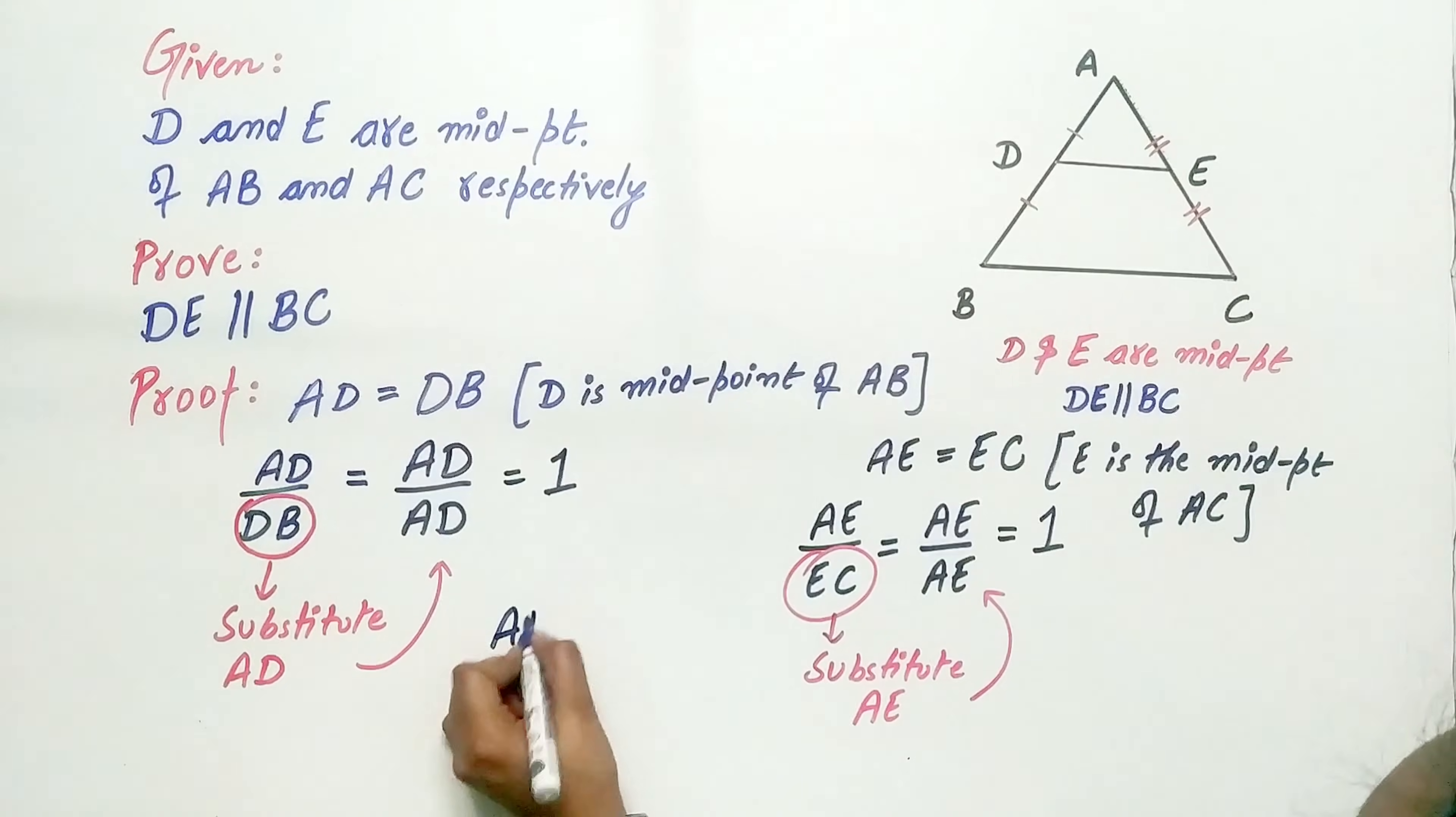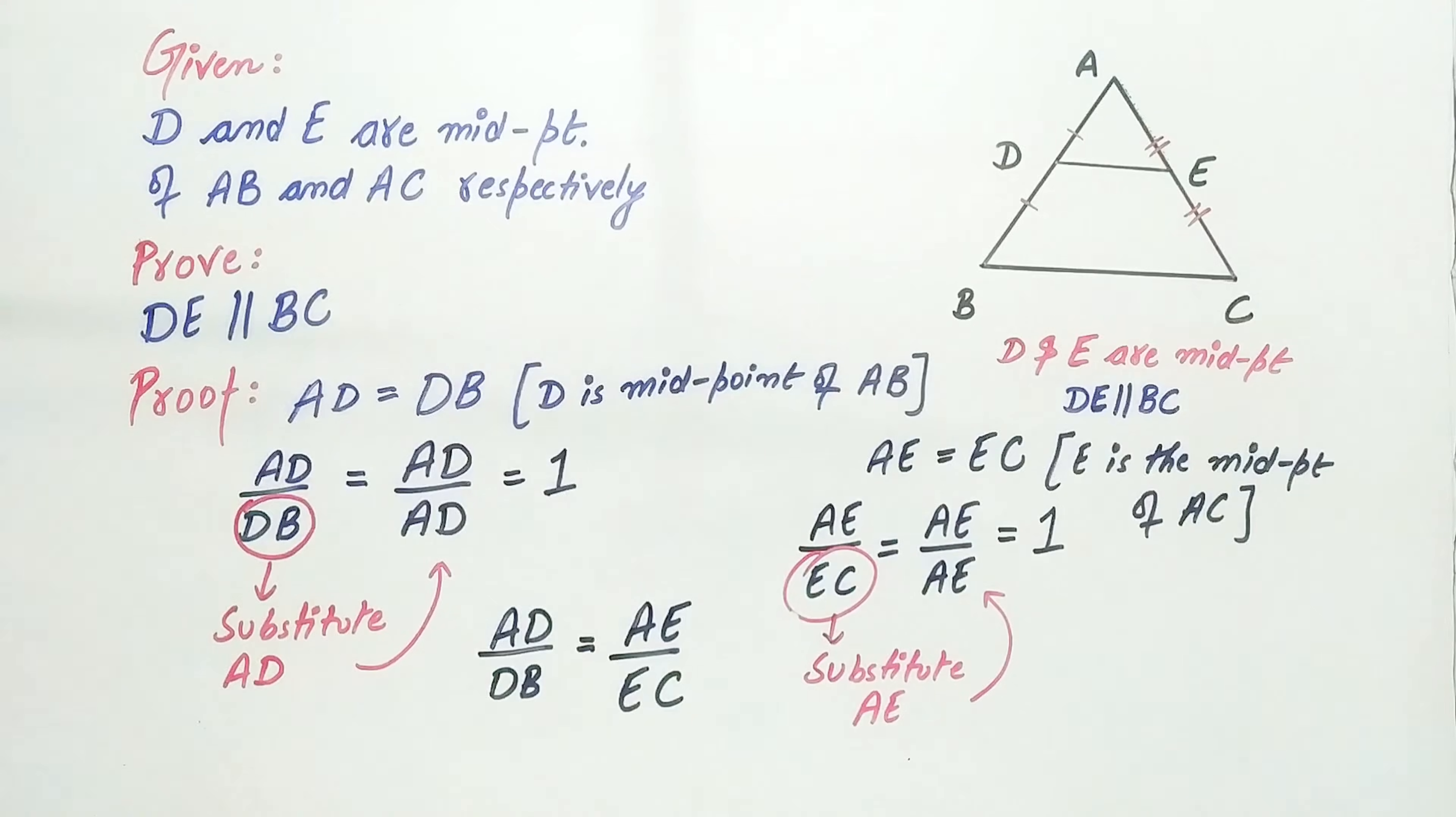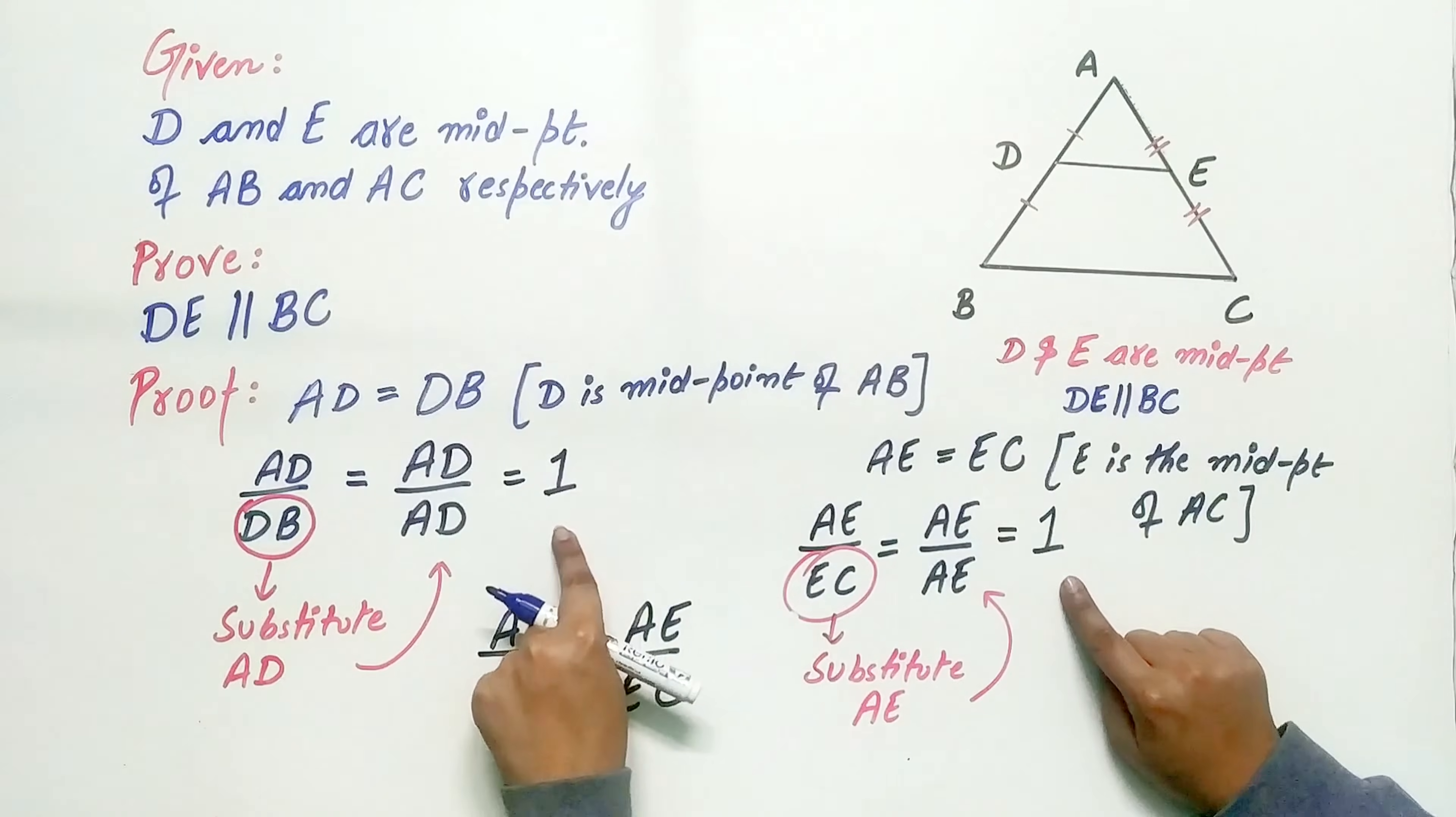Now, AD by DB is equal to AE by EC because the ratio is equal to 1.